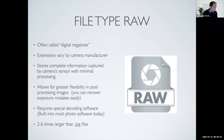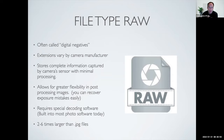Then we have the RAW file type, often called the digital negative. It's every piece of information the camera captures, all stored into one file. It's generally much larger than other file types — two to six times larger than a JPEG. But it allows a lot of post-processing flexibility. If you realize your exposure wasn't right, you can go back and fix a lot of things because you have all that information. Every camera manufacturer has a RAW file type; the extension just varies by manufacturer.